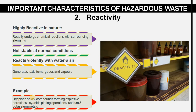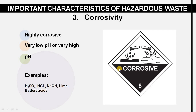Examples of reactive waste include dry picric acid and sodium and potassium metals. Now coming on to the third important characteristic, corrosivity — you can see the symbol of corrosivity. These wastes are generally highly corrosive in nature.